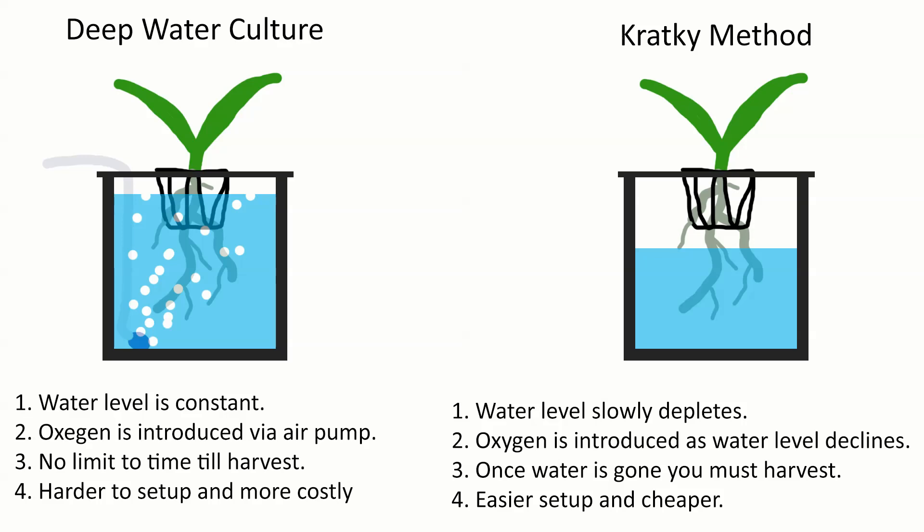With the kratky method, you just allow the actual water to be eaten up by the plants and evaporated. And as that happens, the water level lowers, allowing oxygen to get at the roots. But with the kratky method, once the water levels all the way out, you cannot re-add water to the reservoir without drowning the plants. So it limits your total time between growth to harvest.